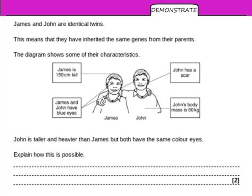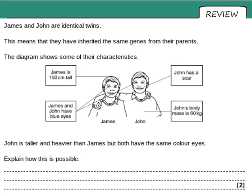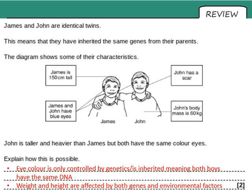Pause here and have a go at that question. For one mark you should mention that eye color is controlled only by genetics — because both boys have the same DNA, they have the same eye color. For the second mark: weight and height are affected by both genes and environmental factors. Even though the boys are identical twins sharing the same genetics, they will have been exposed to different environmental factors, which could have affected them differently.